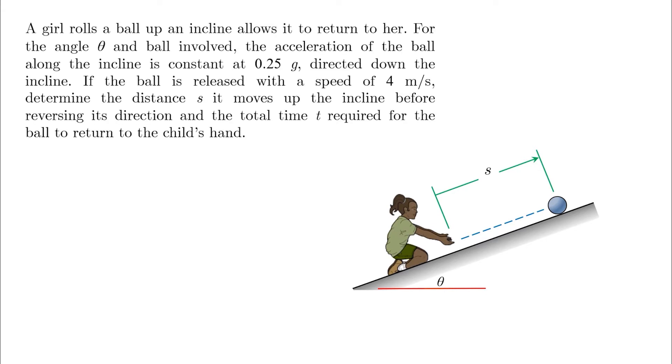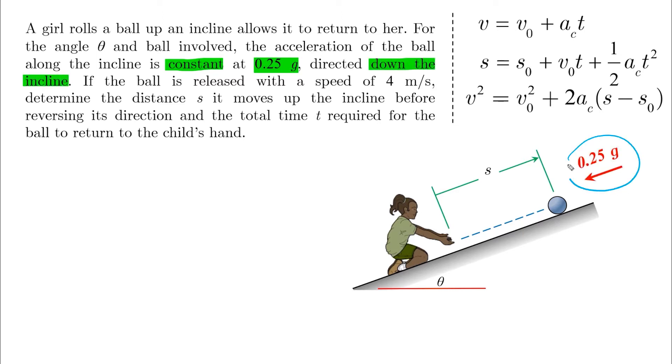A girl rolls a ball up an incline and allows it to return to her. For the angle theta and ball involved, the acceleration of the ball along the incline is constant at 0.25 g directed down the incline. This is the key to solve the problem: constant at 0.25 g and down along the incline.